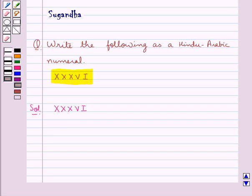Now we know that in Hindu-Arabic numeral the value for X is 10, the value for V is 5, and the value for I is 1.